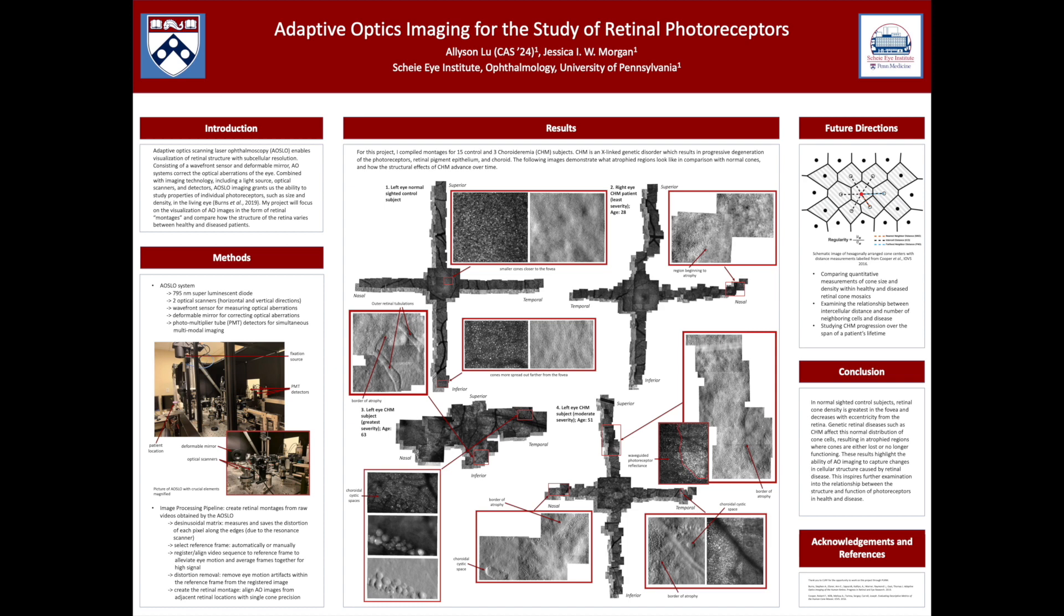With these results in the future, I would conduct cone size and density analyses to better quantify the differences between normal sighted and choroideremia cone mosaics, as well as study how various structures within the retina degenerate over the span of one CHM patient's lifetime.